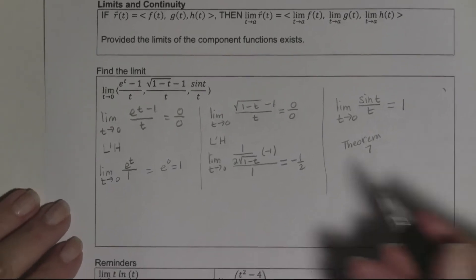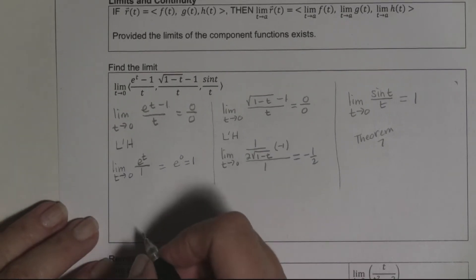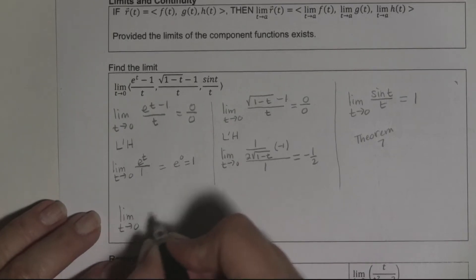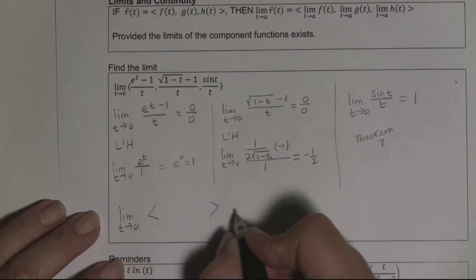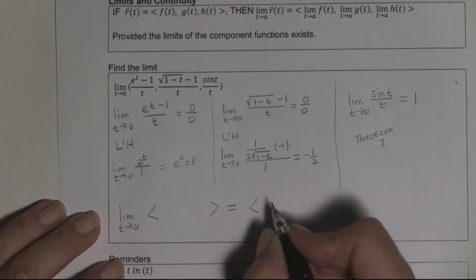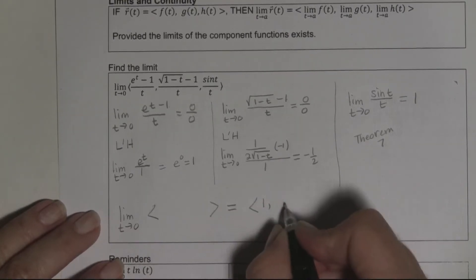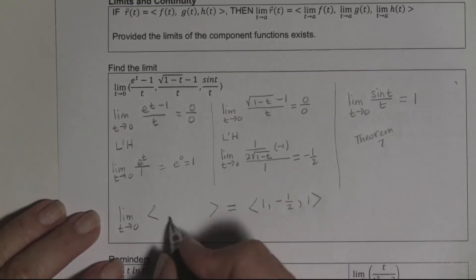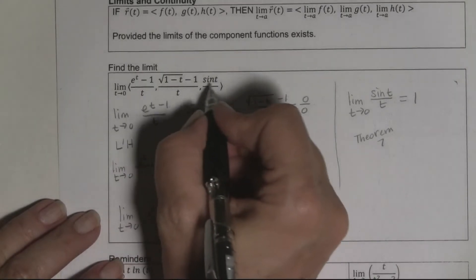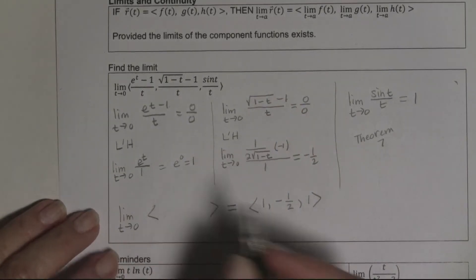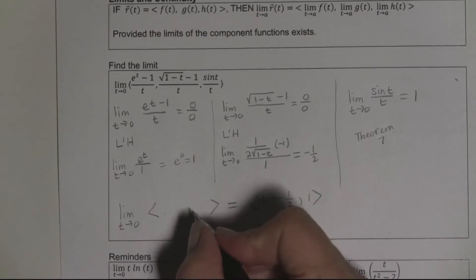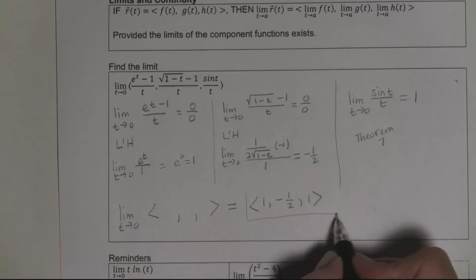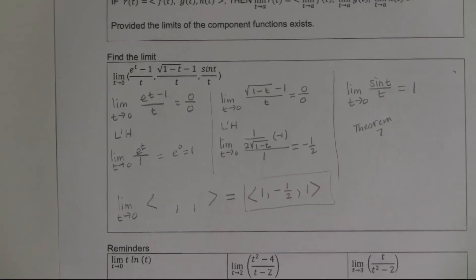Putting it all together: lim(t→0) of the vector equals ⟨1, −1/2, 1⟩.